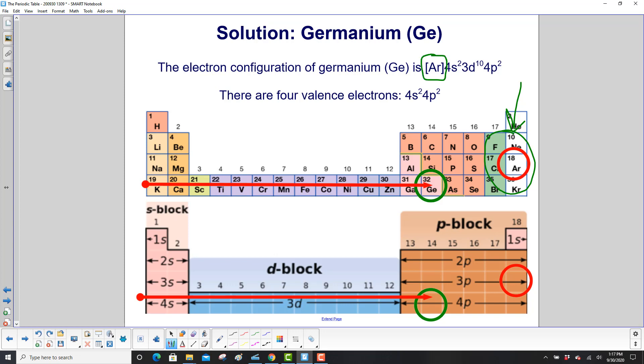Then we go down to the period that germanium is in. We pick up two 4s electrons. Then we keep going, and we pick up all the d block electrons, and there's ten of them. So that's 3d10. And finally, two more electrons in the 4p level. So then we get 4p2.